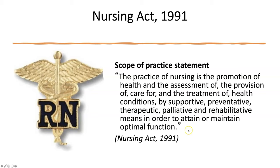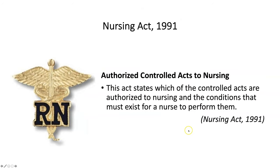For us, the scope of practice statement for nursing is: the practice of nursing is the promotion of health and the assessment of, and the provision of care for, and the treatment of health conditions by supportive, preventative, therapeutic, palliative and rehabilitative means in order to attain or maintain optimal functioning. The authorized controlled acts to nursing identifies which of the controlled acts are authorized to nursing and the conditions that must exist for a nurse to perform them. Each college will have their own act identifying which controlled acts are authorized to their members.